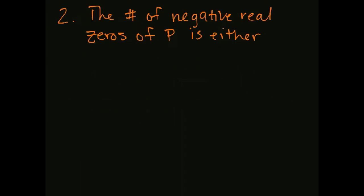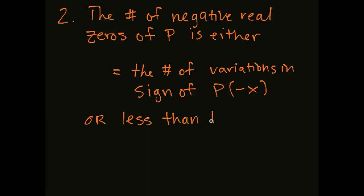Now the second part of the rule. What about the negative real zeros of p? The second part of this rule deals with that. The number of negative real zeros of p is either equal to the number of variations in sign of p(-x), so I plug in a negative everywhere I see x, simplify and see what happens, or less than that by an even whole number.